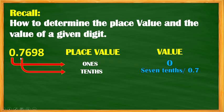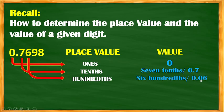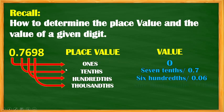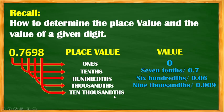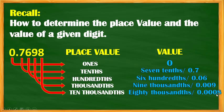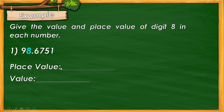Then we have 6 — the place value of 6 is hundredths, so the value is 6 hundredths or 0.06. Then we have 9 — the place value of 9 is thousandths, so 9 thousandths or 0.009. And then we have 8 — 8 is in the ten-thousandths place, therefore we have 8 ten-thousandths or 0.0008.